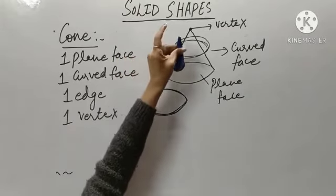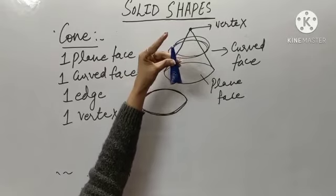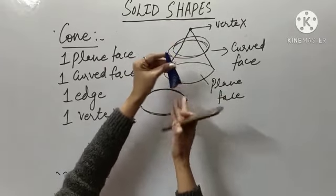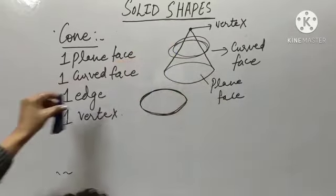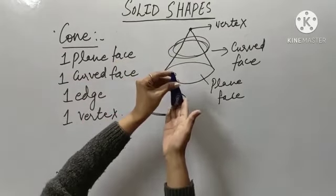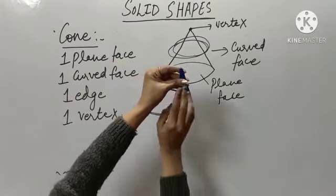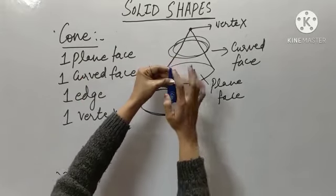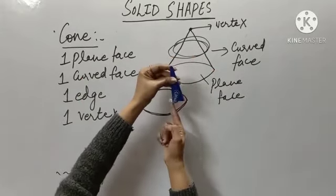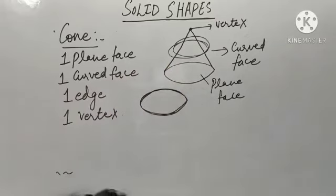So, this cone has one vertex, one plane face, one curved face, and one circular edge. I hope it is clear to you. I hope cylinder and cone are clear to you.